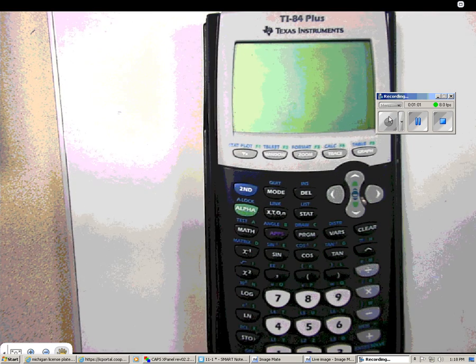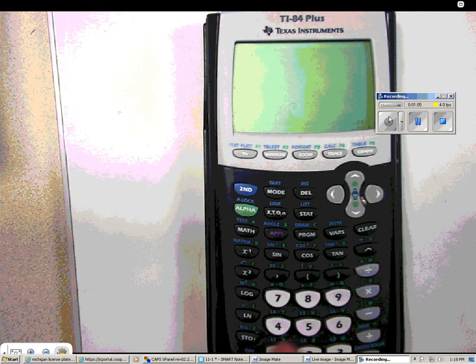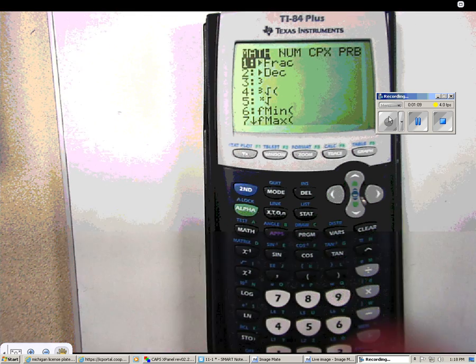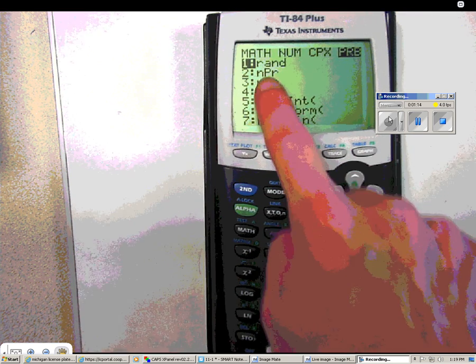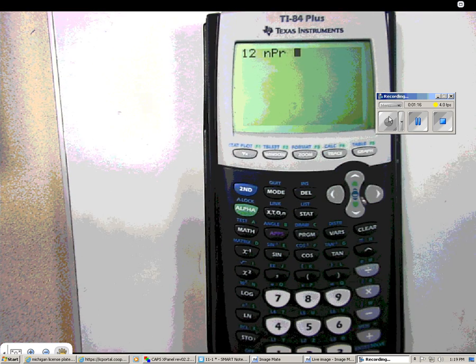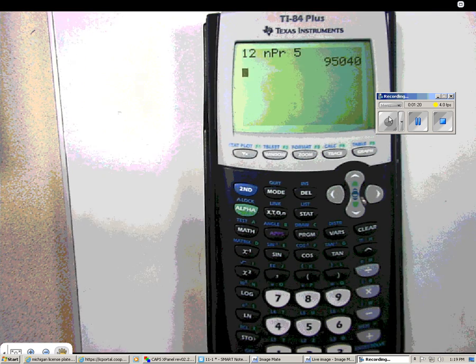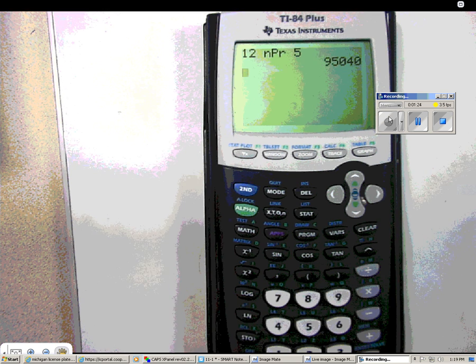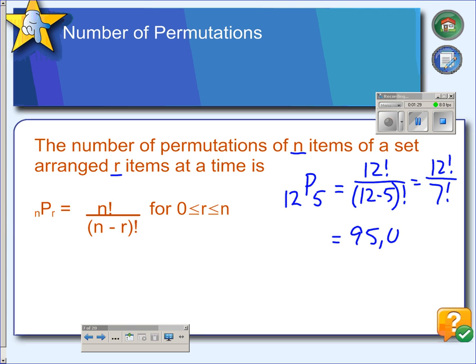and you can do the math using your factorial button, but there is an NPR button on your calculator. So to calculate 12P5, you would first put the 12 in your calculator, then you go to math, arrow over to probability, and then choose number 2, NPR. And finally, we have to put in our R value, which was 5, and that will calculate for us, and we get 95,040.